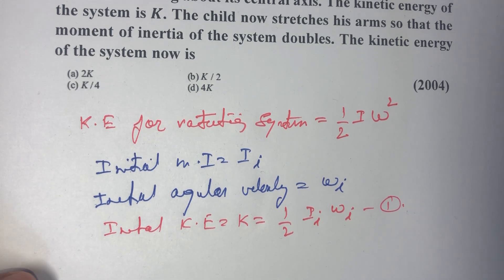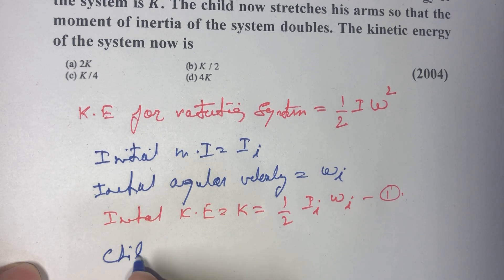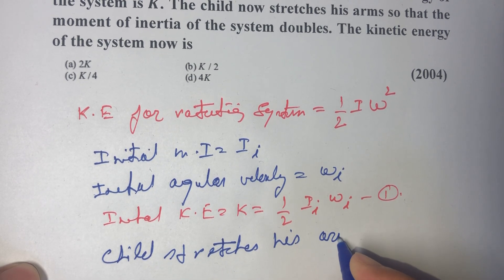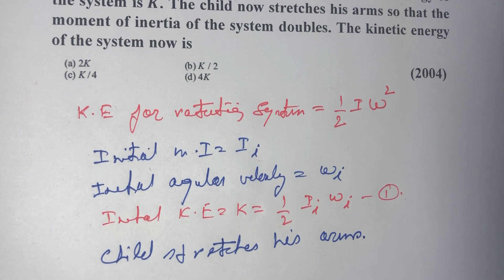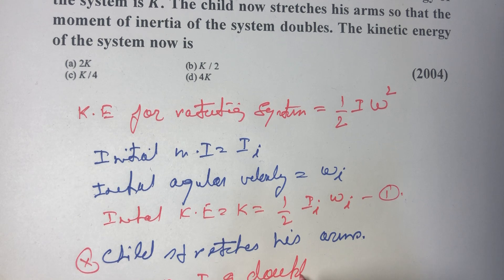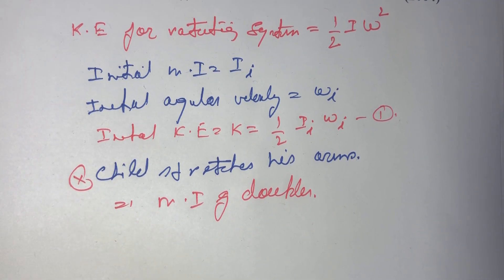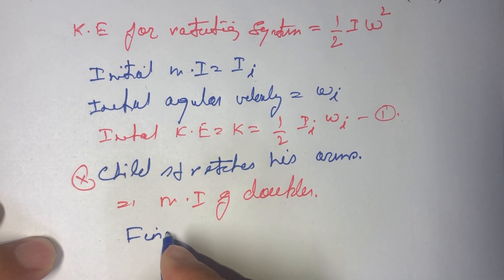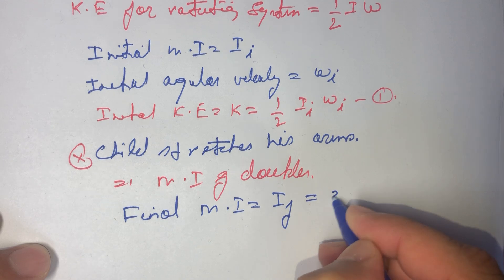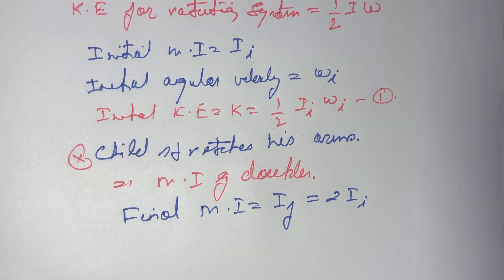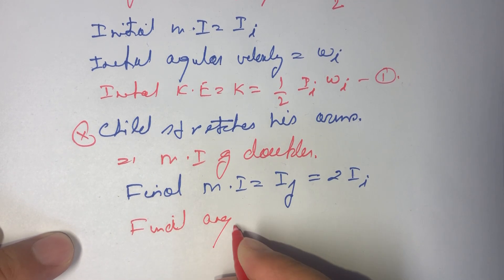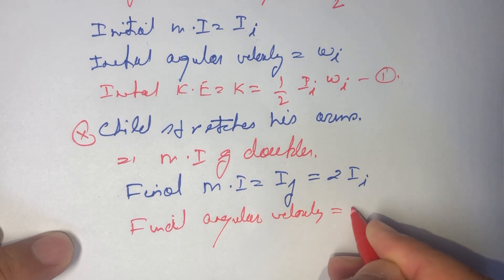Now in the second case, the child stretches his arms. The moment of inertia doubles. So let us say that the final moment of inertia I_f will be equal to twice of I, and let us say that the final angular velocity is given as omega_f.